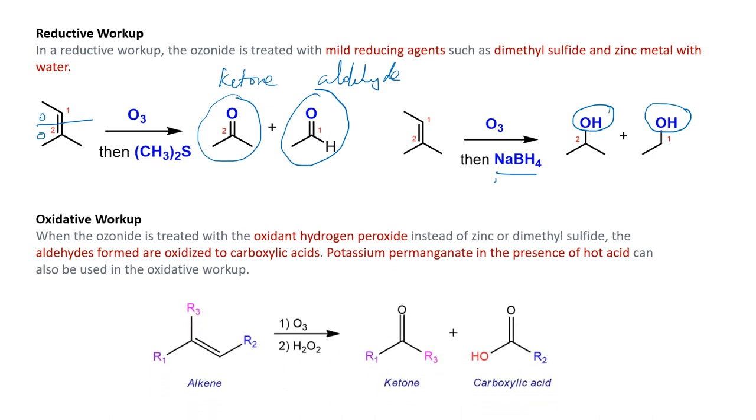When we see the oxidative workup, oxidants such as hydrogen peroxide or potassium permanganate can be used. These oxidants again cleave the double bond and oxygen is substituted. But what happens in this case is aldehydes that are formed in reactions in the presence of strong oxidizing agents will convert to carboxylic acid. The same thing happens here too. When we compare the reductive workup and an oxidative workup, the reductive workup of an alkene results in a ketone and an aldehyde, whereas an oxidative workup results in a ketone and a carboxylic acid, provided the other group is an aldehyde. If it is a ketone, then the carboxylic acid may not be formed, both could be a ketone.